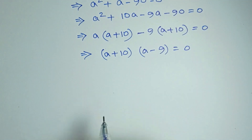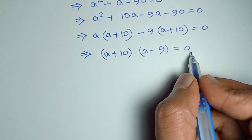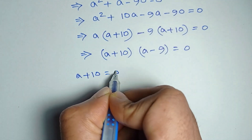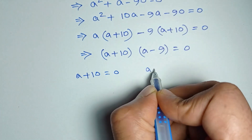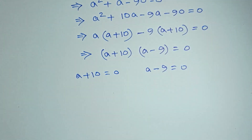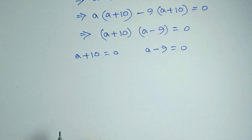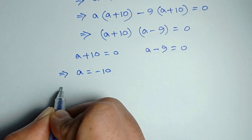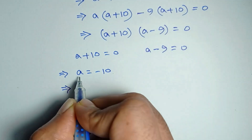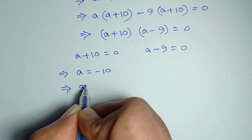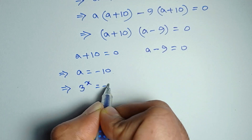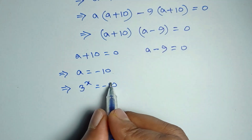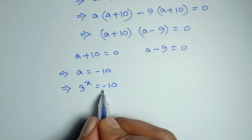So we can write a plus 10 is equal to 0, or a minus 9 is equal to 0. Then a is equal to negative 10. Since 3 to the power x is equal to a, putting the value of a gives 3 to the power x is equal to negative 10. But the power of a positive number cannot be negative, so there is no solution from here.